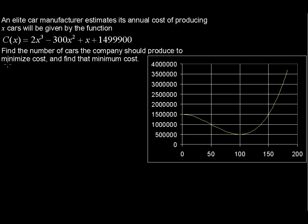An elite car manufacturer estimates its annual cost of producing x cars will be given by the function C(x) equals 2x to the third minus 300x squared plus x plus 1,499,900. Find the number of cars the company should produce to minimize cost and find that minimum cost.